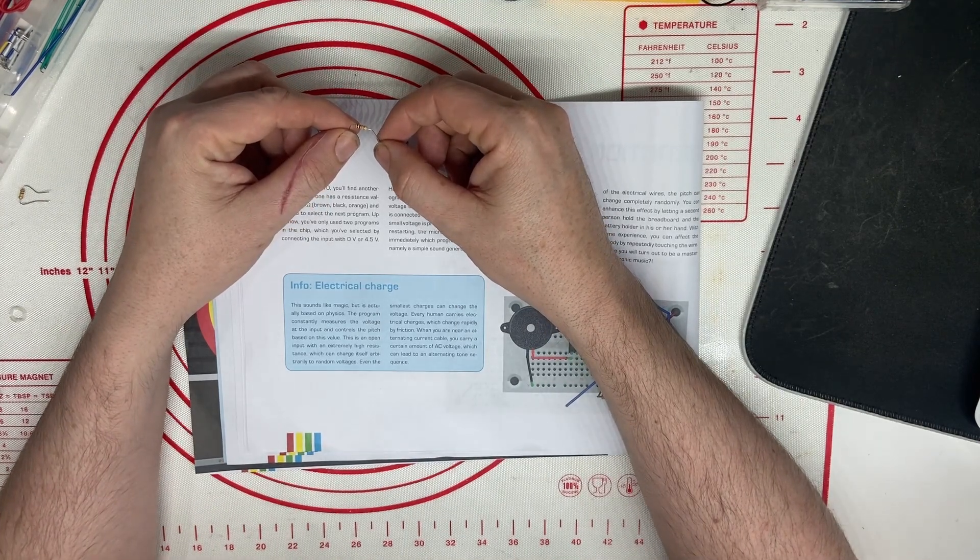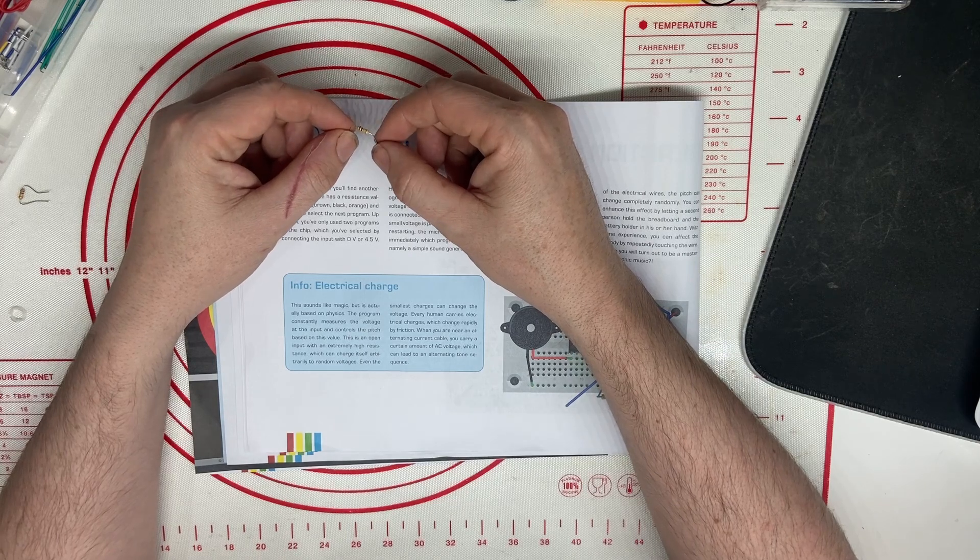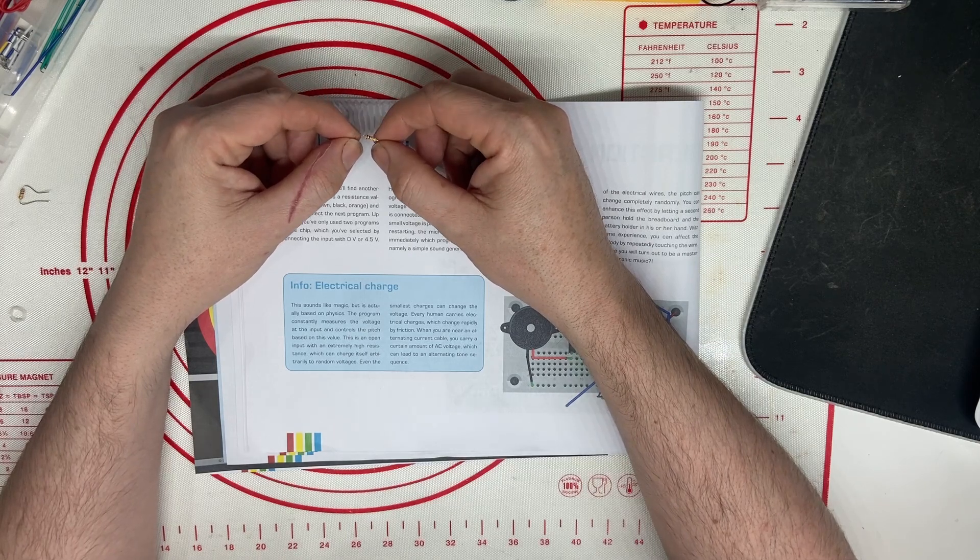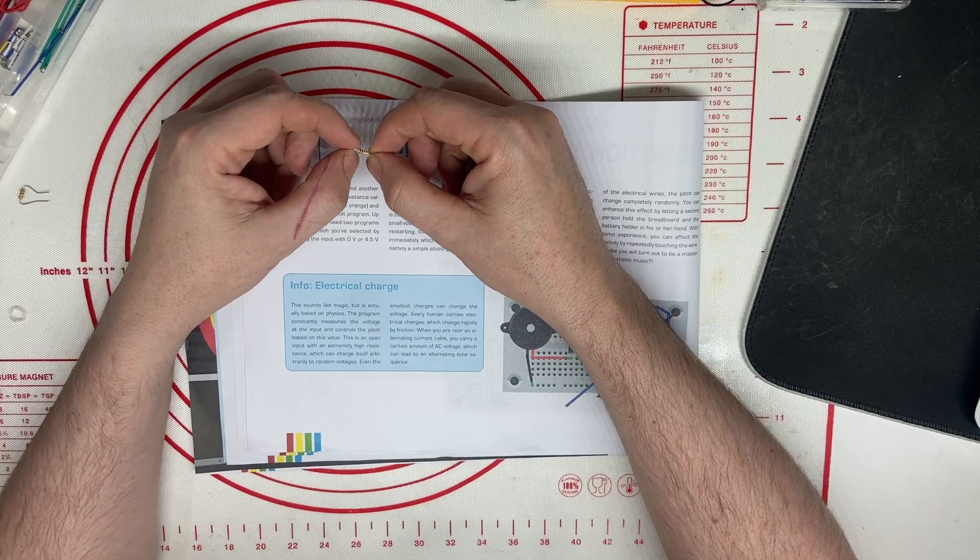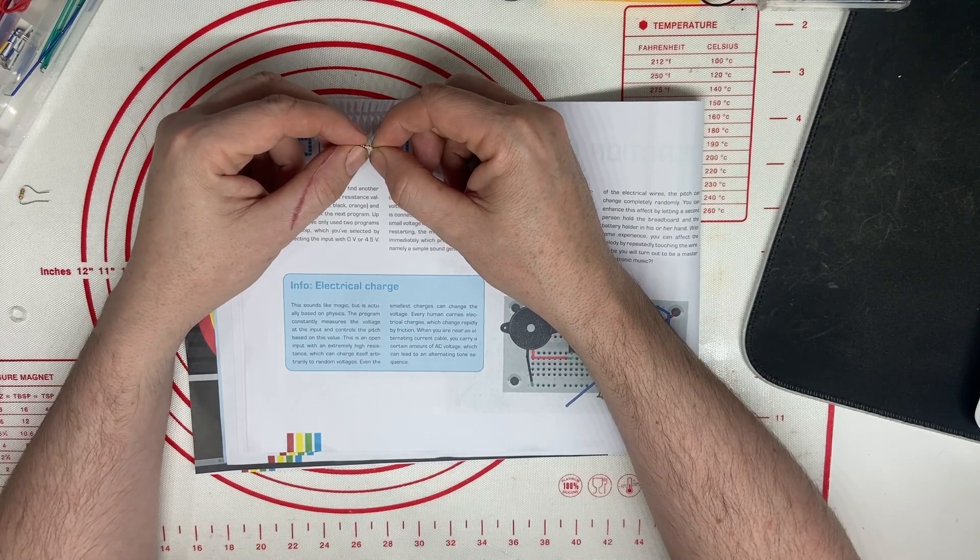It is used to select the next program. Up to now you've only used two programs on the chip, which you selected by connecting the input with 0 or 4.5 volts.